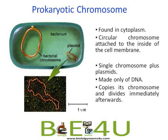Prokaryotes have a circular chromosome that is normally attached to the cell membrane — a single chromosome. Most often, there are extra-chromosomal double-stranded circular DNA molecules which are called plasmids. Plasmids carry genes for antibiotic resistance, for bacteriocins like colicins, or provide some advantage to bacteria to thrive in different environments.